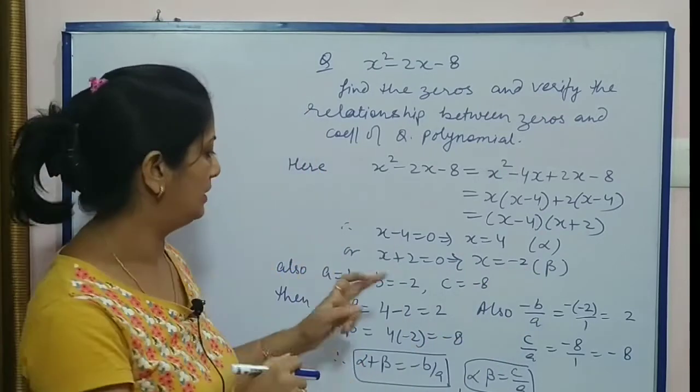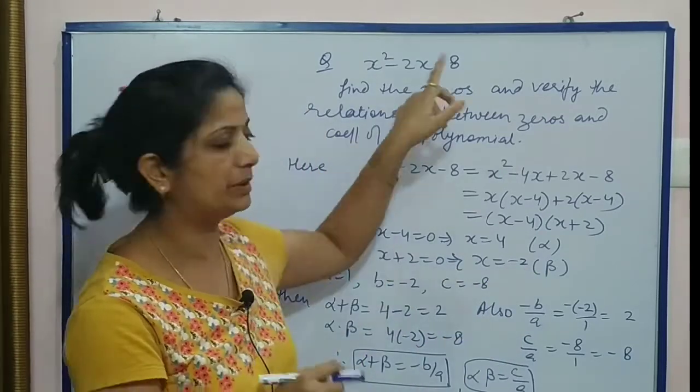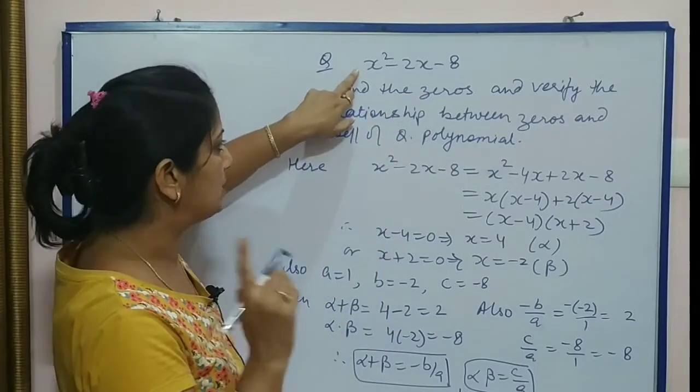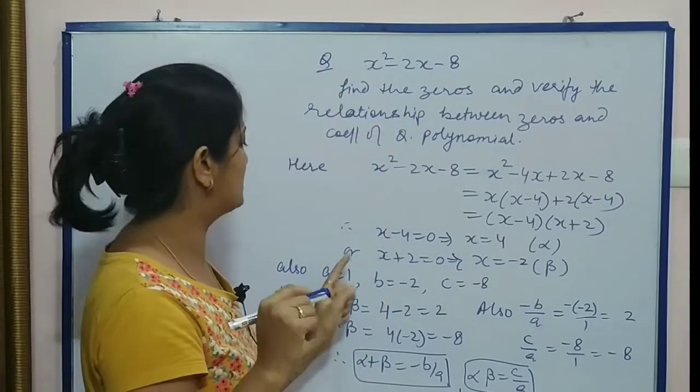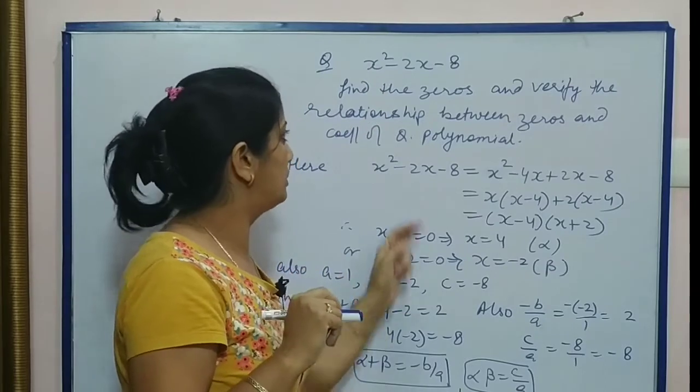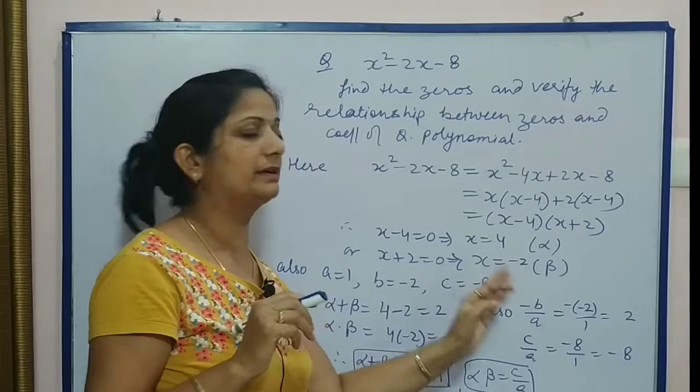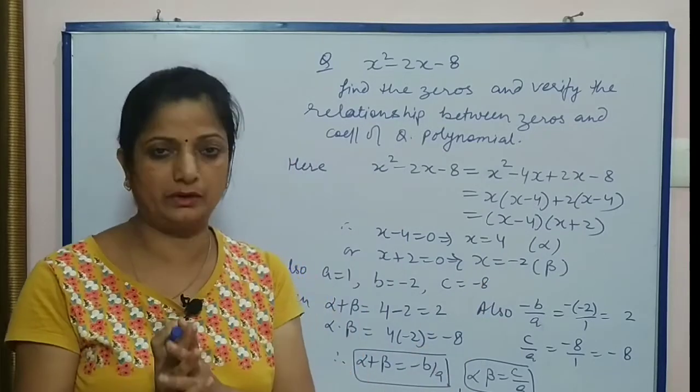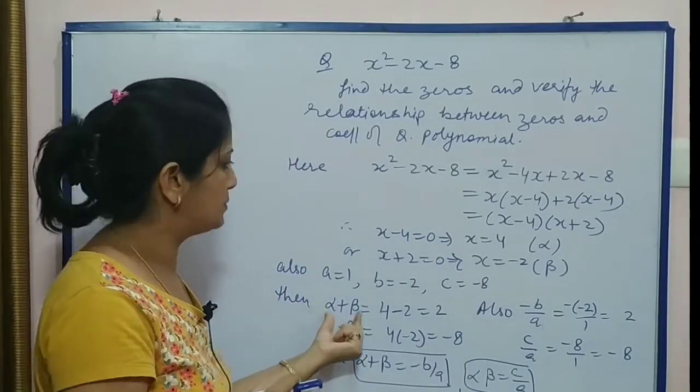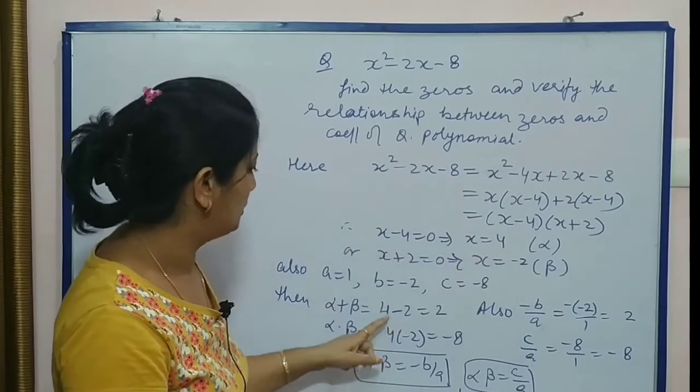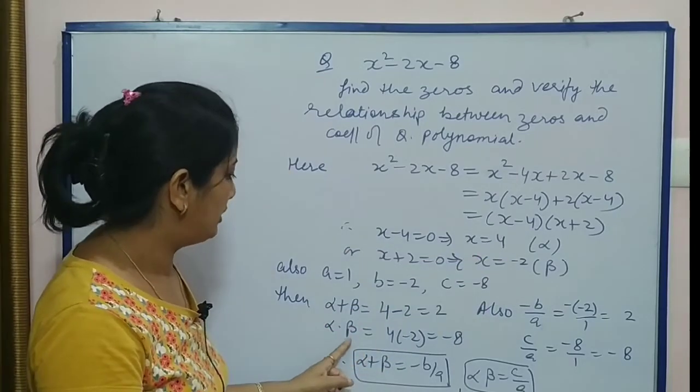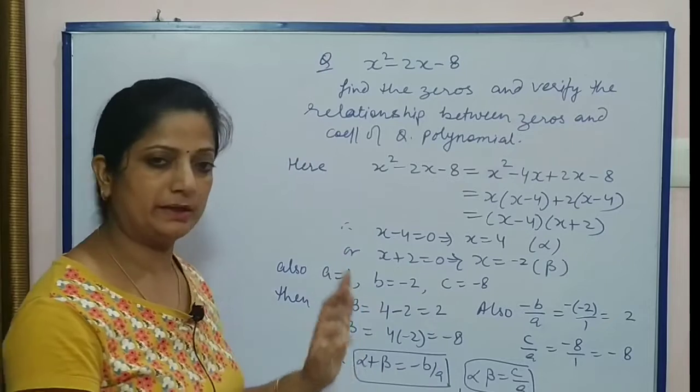α, β hum ne find kar diya. ABC ki value bhi humare paas hai equation ke help se. x² ka multiple kuch nahi hai - 1 hai, that means a = 1. b equals to jo x ka multiple hai, -2. Or c jo constant term hai, that is -8. Now α + β: 4 - 2, that is 2. And α × β: 4 × -2 = -8.